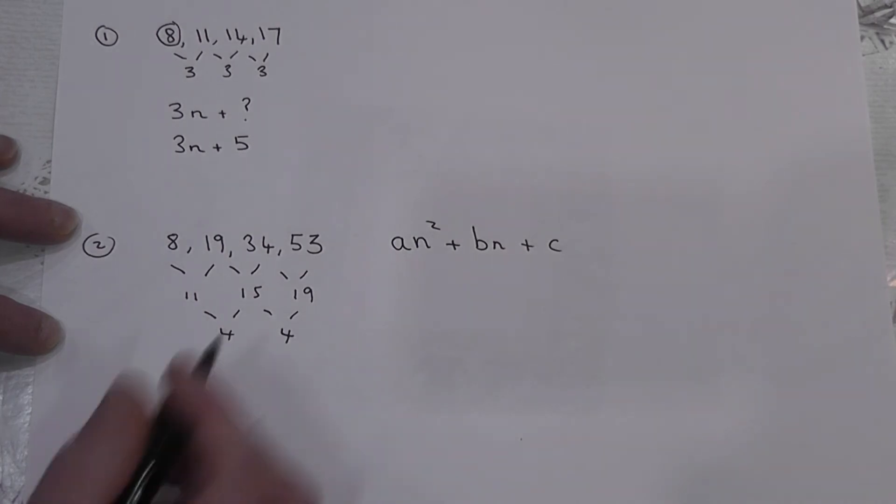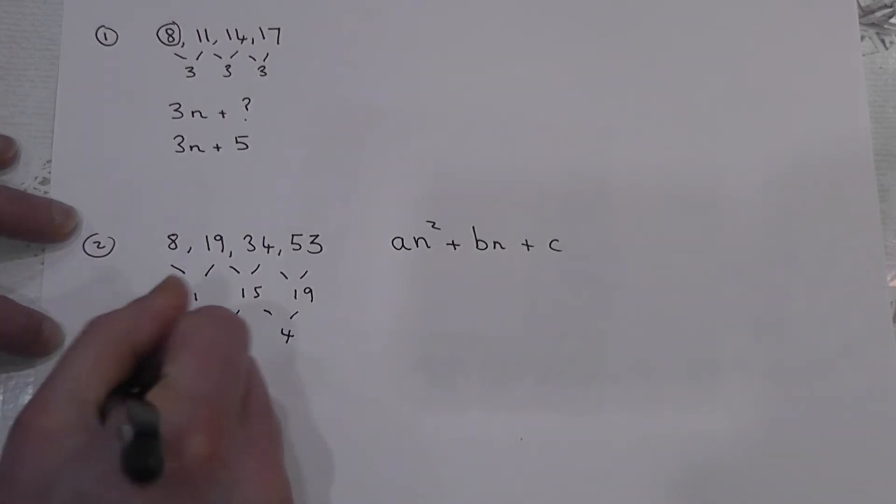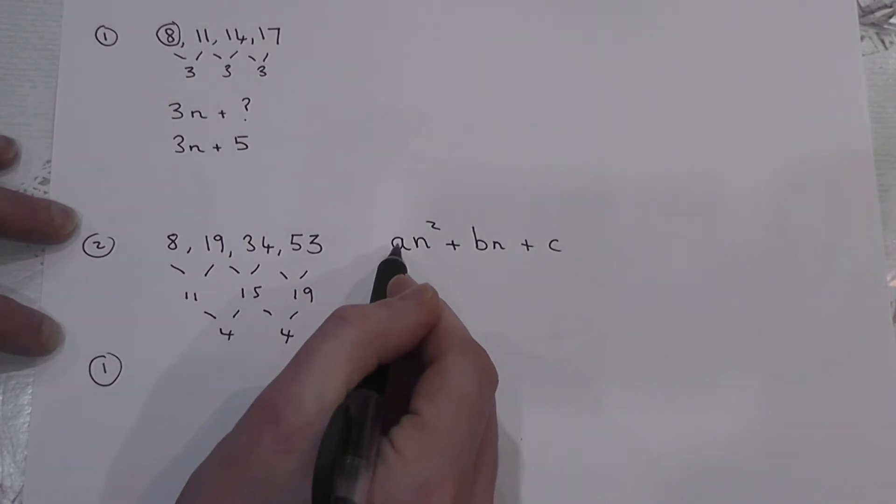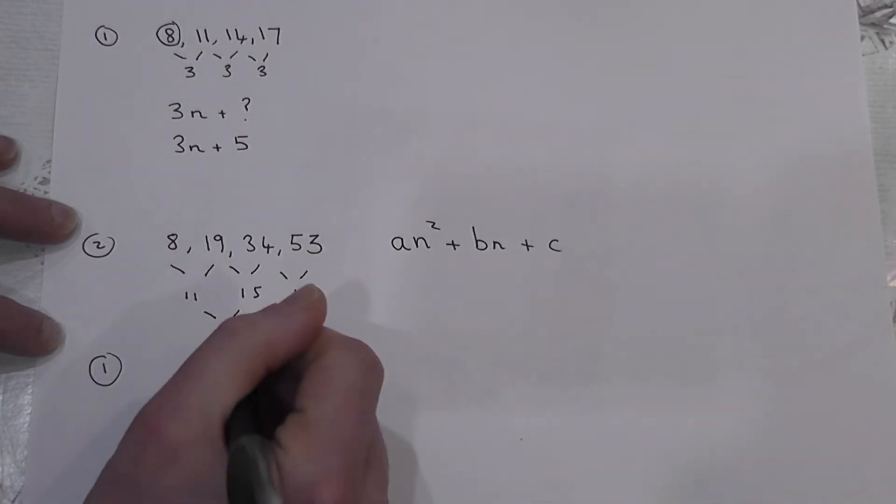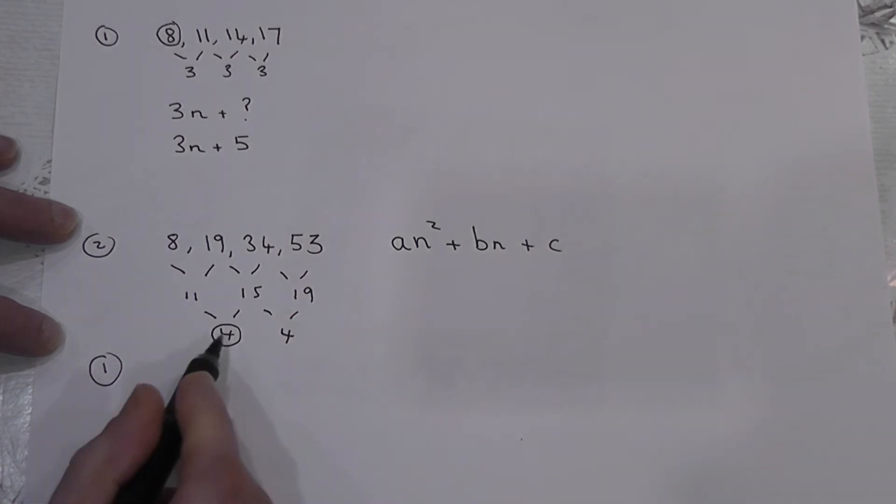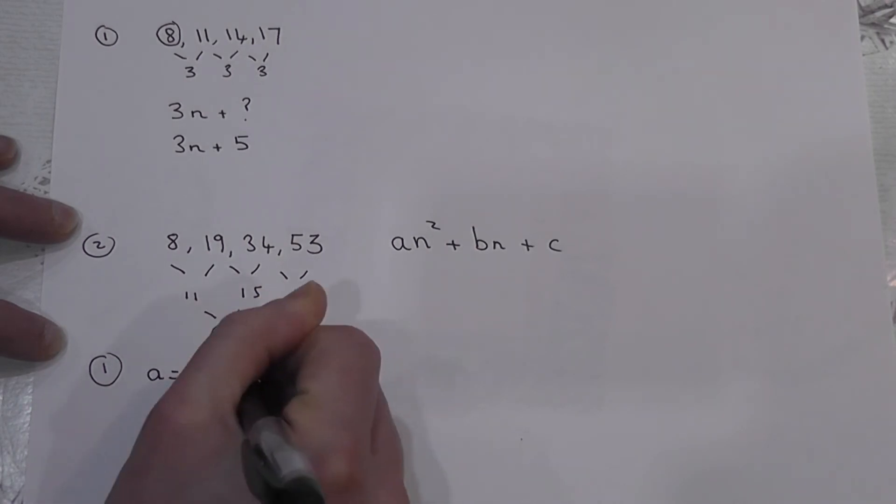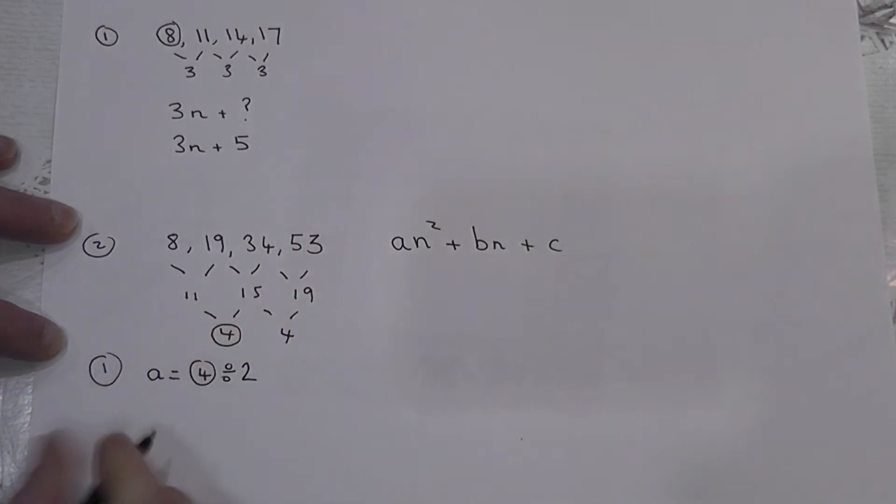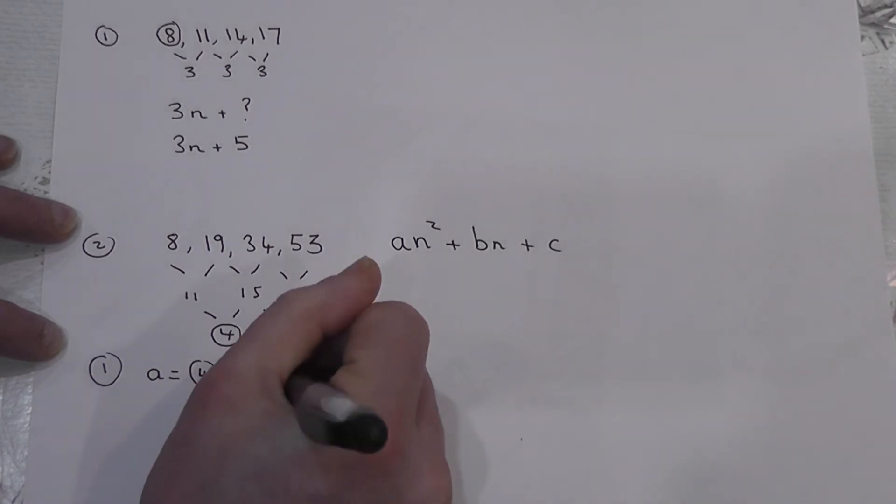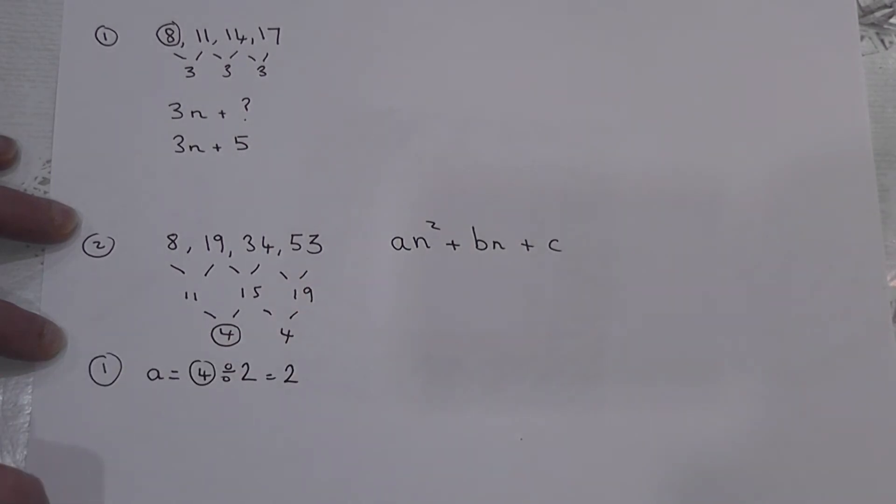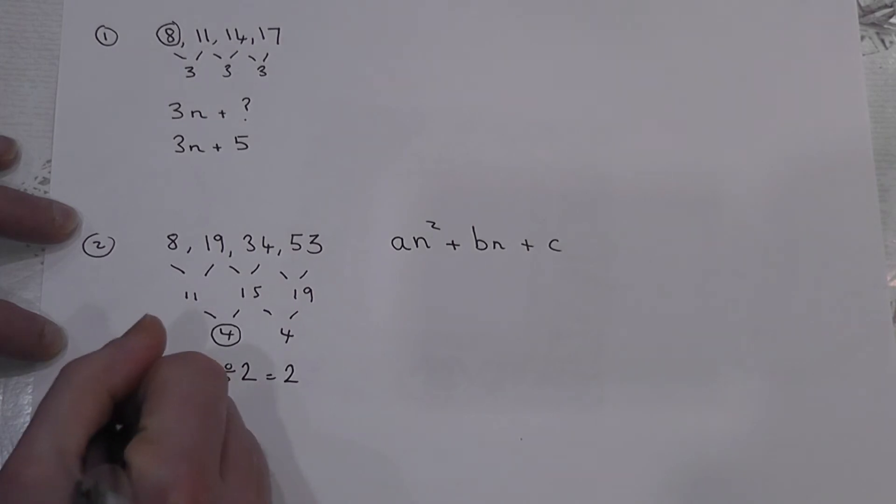Now the first trick or golden rule is really really simple. To find a, all we ever have to do is halve that second difference. So the second difference is 4 in this case. So to find a, you take whatever that second difference is and you always halve it. So 4 divided by 2 is just 2. So a is just 2. So it's always half of the second difference. That's the first golden rule.